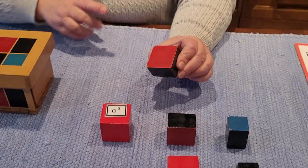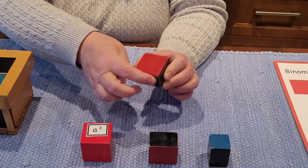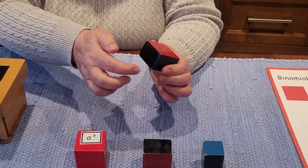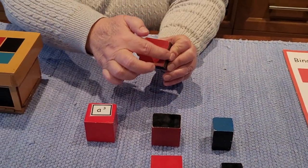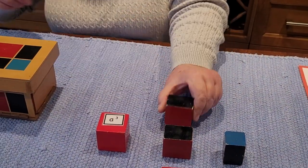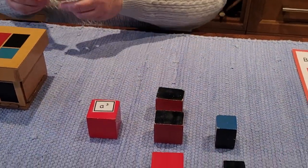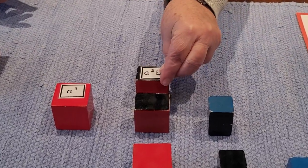This piece is A squared, but the third dimension is the same as B. So we will call this one A squared B. This is how we write A squared B.